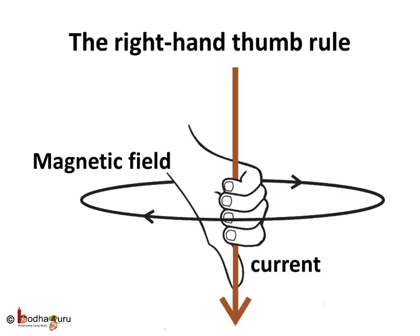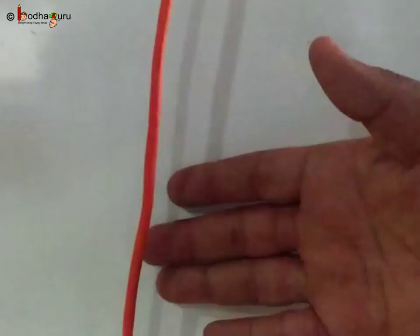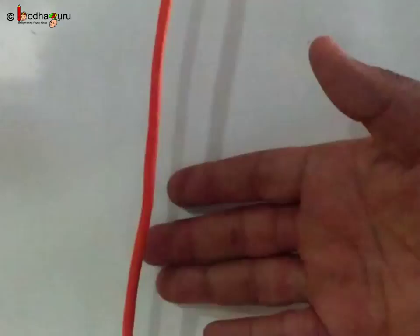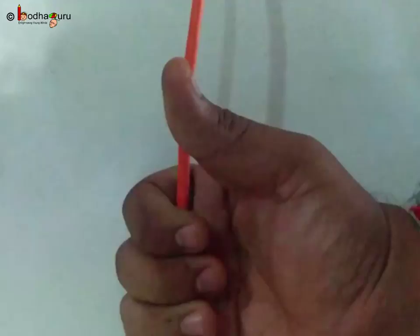Imagine that you are holding a current carrying straight conductor in your right hand such that the thumb points towards the direction of electric current. Just imagine, don't do it. Then, your fingers will wrap around the conductor in the direction of the lines of the magnetic field.